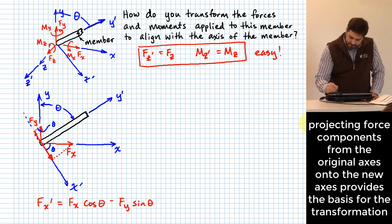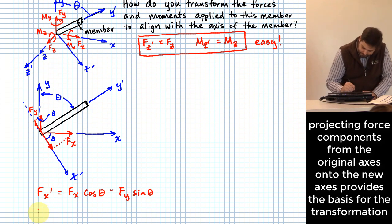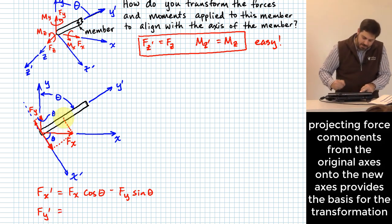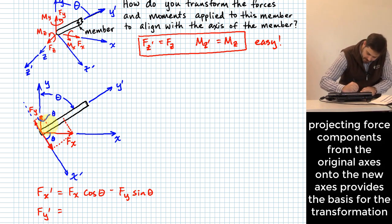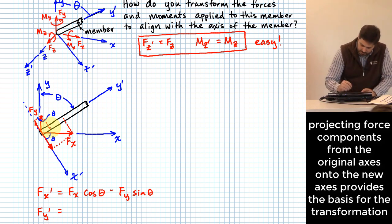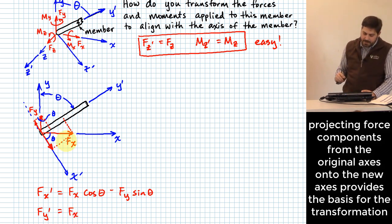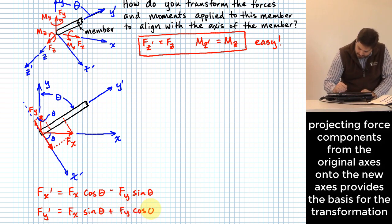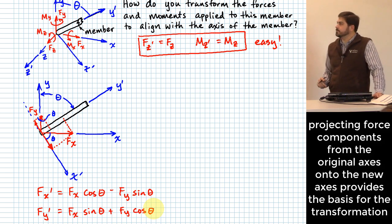We can do the same for the Y-prime direction. We project FX and FY onto the Y-prime axis, and in this case those two contributions add rather than subtract. So FY-prime equals FX·sinθ plus FY·cosθ. That covers the force transformation in the XY plane.